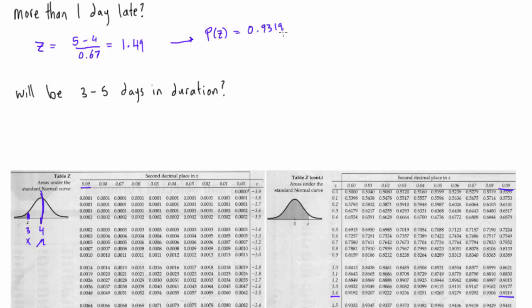Let's figure out what's going on. We're using a normal curve centered at 4 — that's our expected duration. X in our case is 5, which is one day longer, i.e., more than one day late. The z-score table returns the probability of landing in the shaded area. Multiplying by 100%, there's a 93.19% chance that the activity finishes in less than 5 days. But we need the probability that it finishes in more than 5 days.